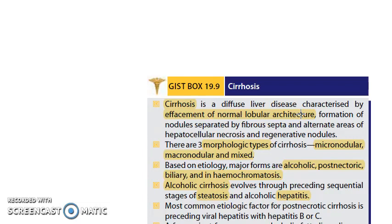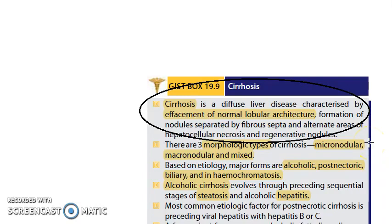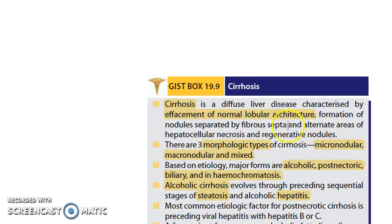The nodules are separated by fibrous septa, and there are alternate areas of necrosis and nodules. So in cirrhosis: normal lobar architecture is gone, nodules have come in that place, there are fibrous septa, and there are alternate areas of necrosis and regenerative nodules.